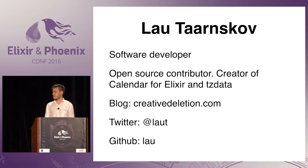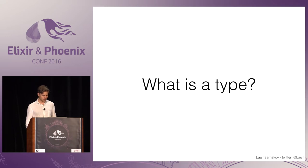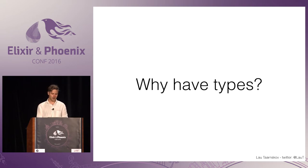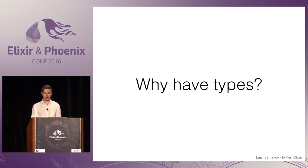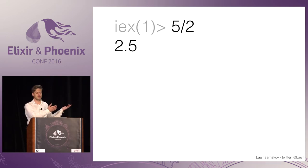See it's creativedeletion.com, and I'm also on Twitter and GitHub. So first of all, what is a type? There are a lot of definitions of it. One of them is that it's a set of possible values. And why do we want types? Why even have them? There are a lot of reasons to have types. One reason is that if you have five divided by two, you get something meaningful.